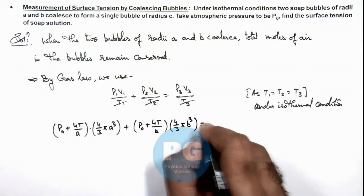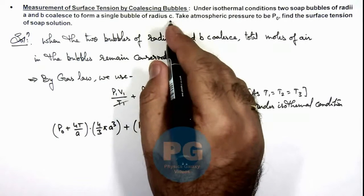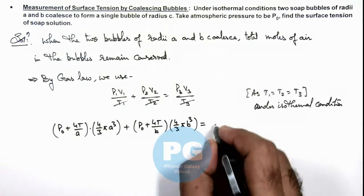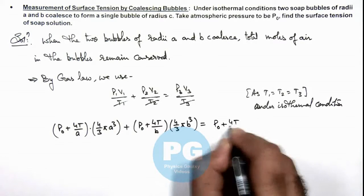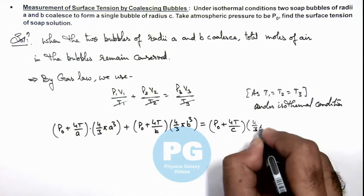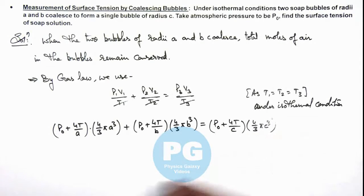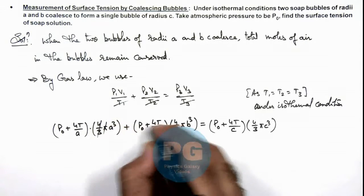And this must be equal to, for the final bubble as its radius is c, we can write its final pressure to be P₀ + 4T/c, multiplied by 4/3πc³. If we simplify this relation, 4/3π gets cancelled out.